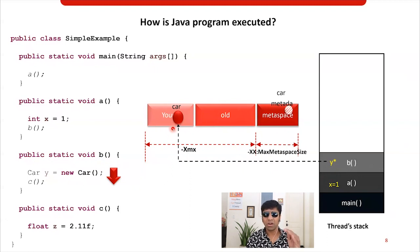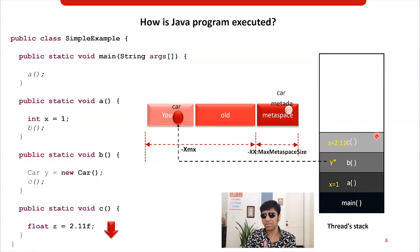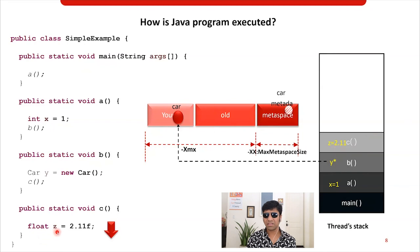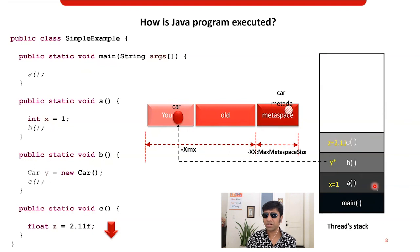Now the thread progresses and goes on to execute method C. Method C is added to the thread stack frame. Since the float Z is a primitive data type and a local variable, it is stored in the thread stack frame. The value 2.11 is also stored there. This is how the stack frame and the memory look when the JVM has completed executing all the methods.